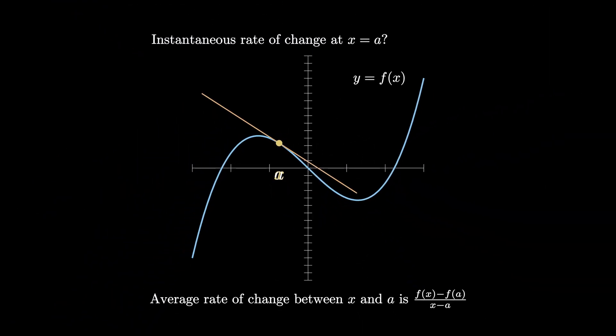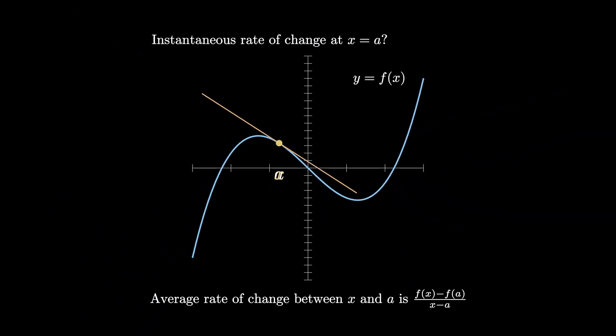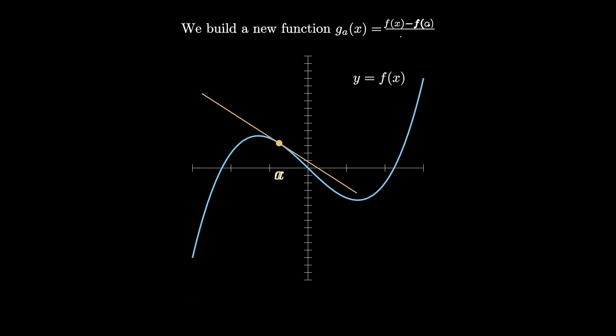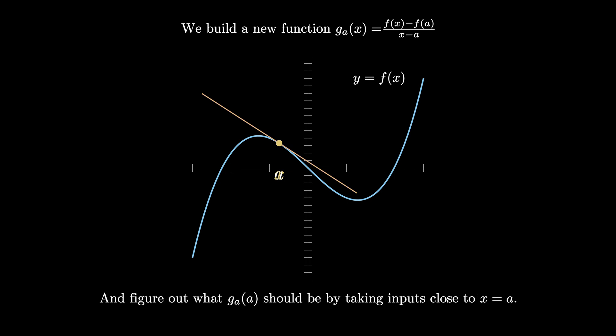More formally, we say that the slope of the tangent line, or the instantaneous rate of change at a point, is equal to the limit as x approaches A of the average rate of change. So it's the limit as x approaches A of f of x minus f of A, all over x minus A. To see what's going on visually, we can build a brand new function g sub A of x, which measures the average rate of change between A and x. We can't plug A into this function, but we can look at it graphically and figure out what that value should be by taking inputs very close to x equals A.